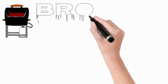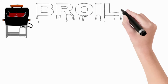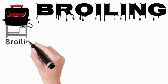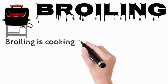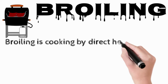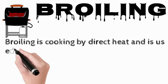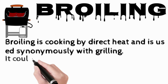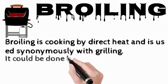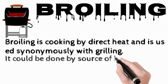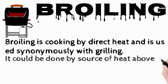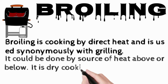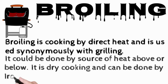Broiling: broiling is cooking by direct heat and is used synonymously with grilling. It can be done with the source of heat above or below. It is dry cooking and can be done on iron bars or pan-broiled, where the food is uncovered and the pan or grill is oiled slightly to prevent sticking, with excess fat removed.